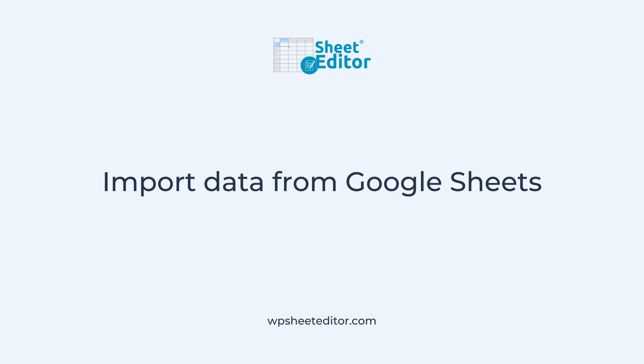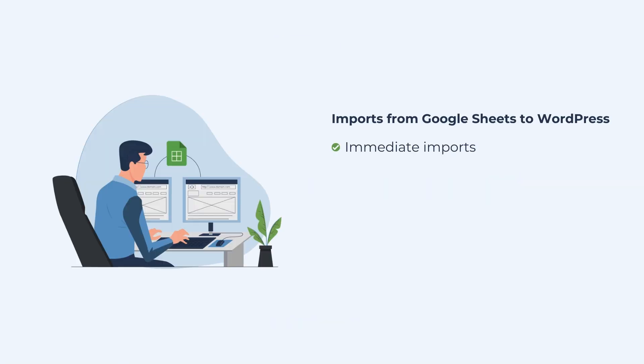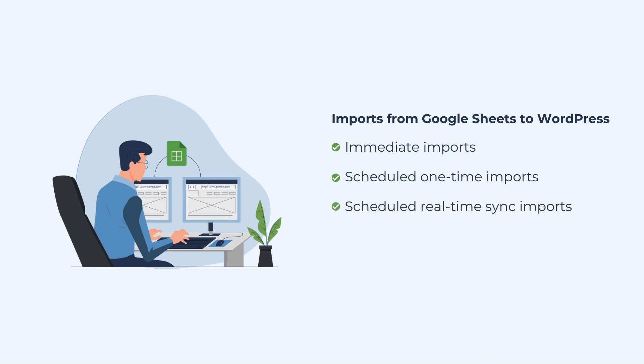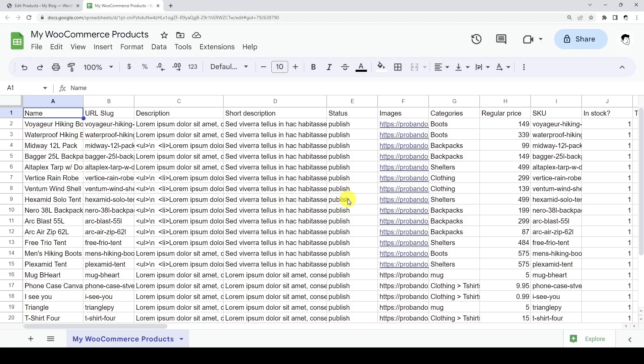Now let's see how to import data from Google Sheets into WordPress. Our service allows you to make immediate imports from Google Sheets to WordPress, schedule one-time imports including real-time synchronization, and schedule recurring imports. Let's make an immediate import from Google Sheets to WordPress. As you can see here, we have edited and created WooCommerce products in Google Sheets, and we need to import that information into WordPress.